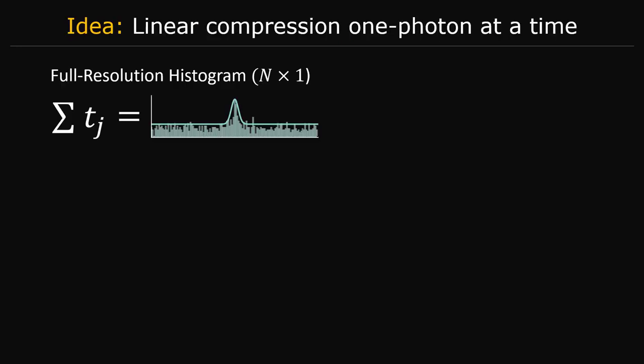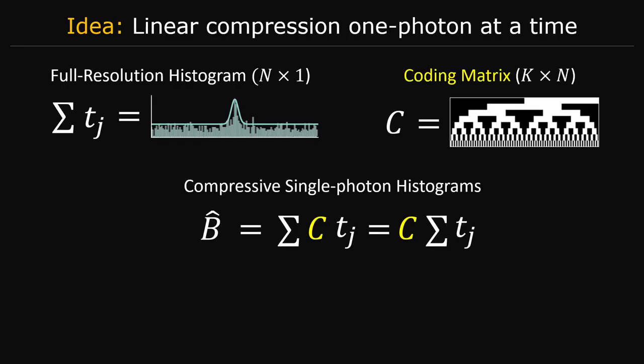So our idea for performing online histogram compression is simple. We design a coding matrix that is used to project each timestamp onto what we call a compressive histogram, which is the data we store and transfer per pixel.